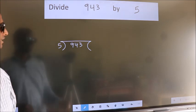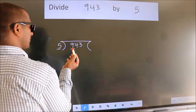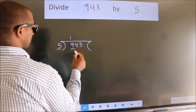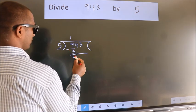Next, here we have 9, here 5. A number close to 9 in 5 table is 5 once 5. Now we should subtract. We get 4.